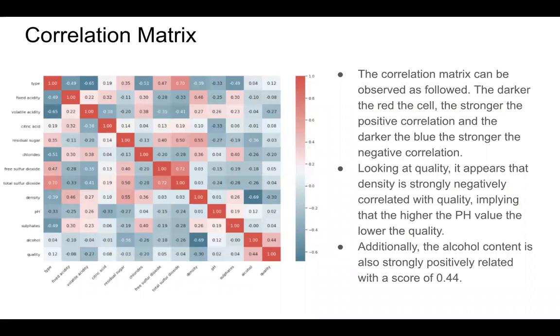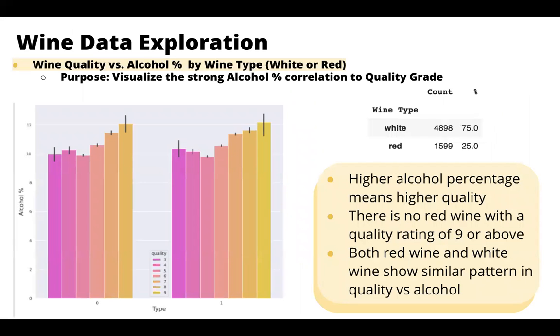First thing we did was do a correlation matrix. The correlation matrix can be read as the darker the red, the stronger the positive relationship and the darker the blue, the stronger the negative relationship. So looking at the quality line, we can see that alcohol is quite strongly correlated with quality. Density is very negatively correlated with quality. As I said before that alcohol was strongly related, we wanted to explore that a little more looking at the alcohol percentage against quality. What we notice here is that actually zero is red wine and there's no red wine in our data set with a quality rating of nine or above. But what's clear is that both the red and the wine data sets show us are similar patterns in that the stronger the wine, the higher the quality rating.